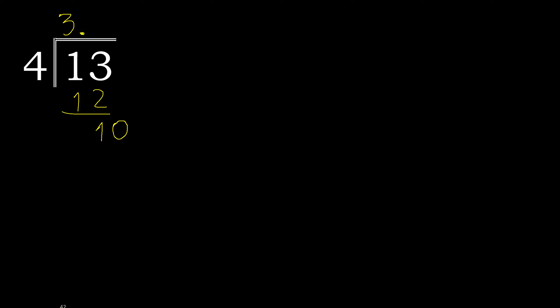4 multiplied by 3 is 12, which is greater. So 4 multiplied by 2 is 8. Then 10 minus 8 is 2.